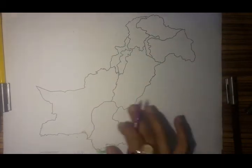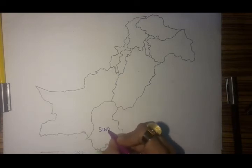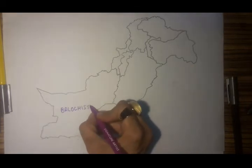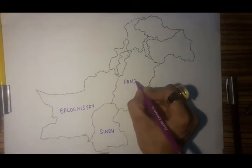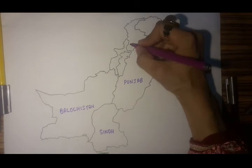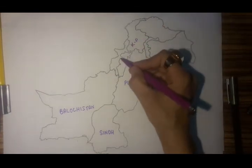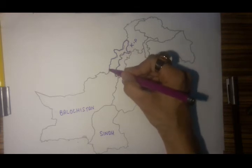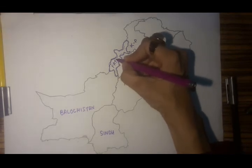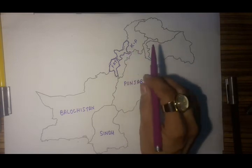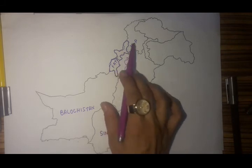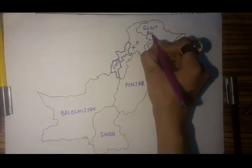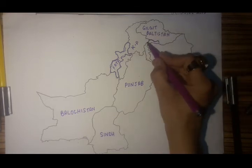This is the map of Pakistan. Let's begin from the south — this is the province of Sindh, this is Balochistan, here is Punjab, and this is KP — Khyber Pakhtunkhwa. This area here, let me mark it clearly — this is FATA, the Federally Administered Tribal Areas, but now it's part of KP. It was earlier a semi-autonomous area but now it's a part of Khyber Pakhtunkhwa. This is Gilgit-Baltistan.